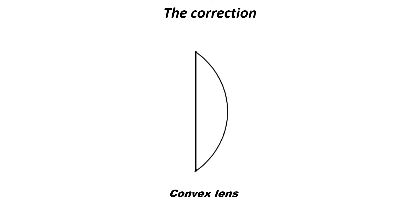So how is this corrected? By using convex lenses. This means a lens that is thicker in the middle and thinner at the outside edges, as shown here. When light passes through a convex lens, it begins to converge.